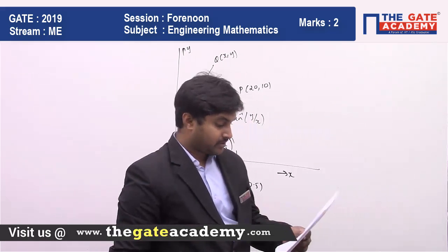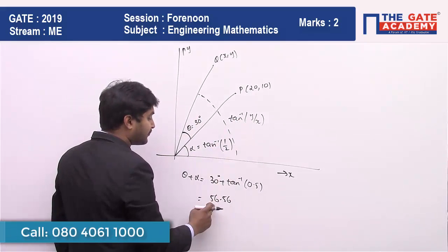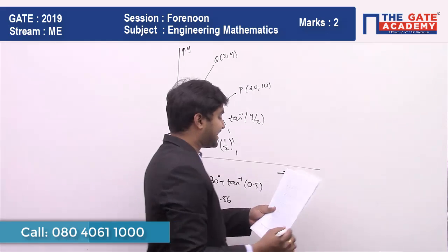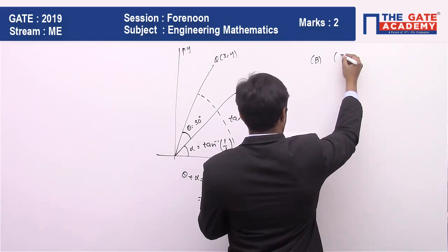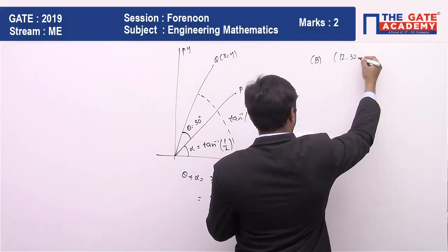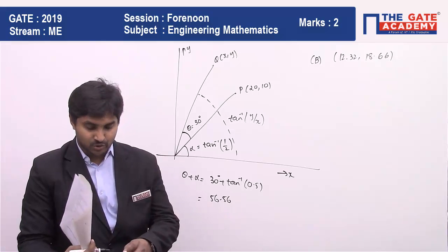You can verify with the options which of them is going to satisfy tan inverse of Y by X is going to be 56.56, and it will be satisfied by option B, which is (12.32, 18.66). So option B is going to satisfy.